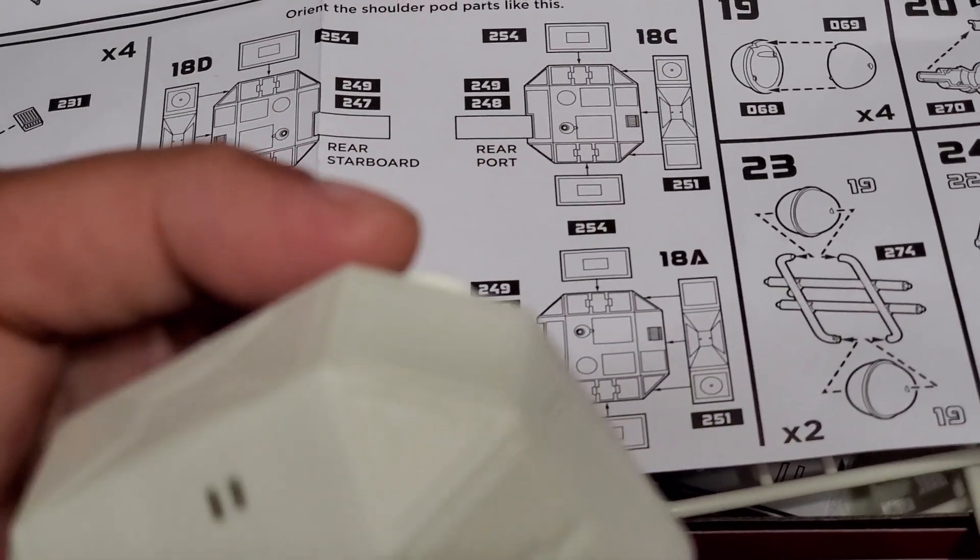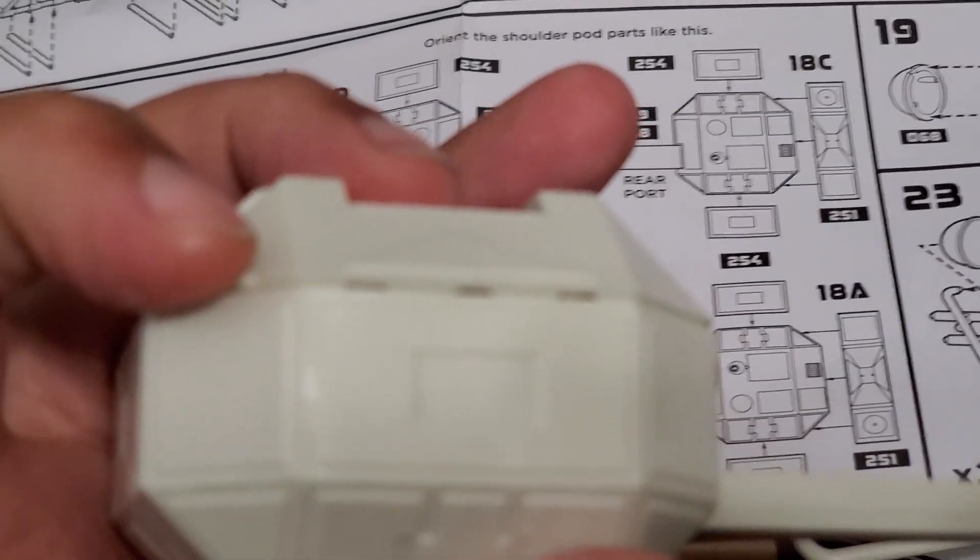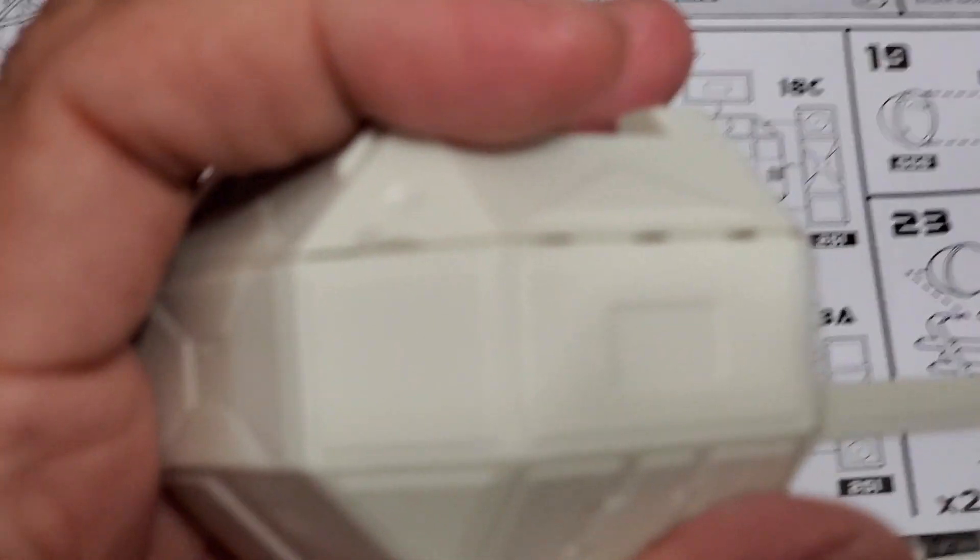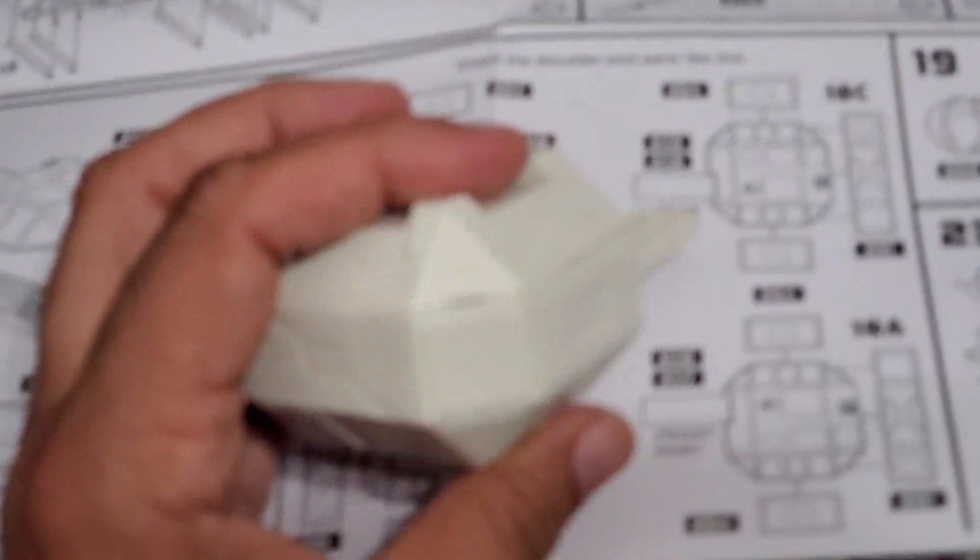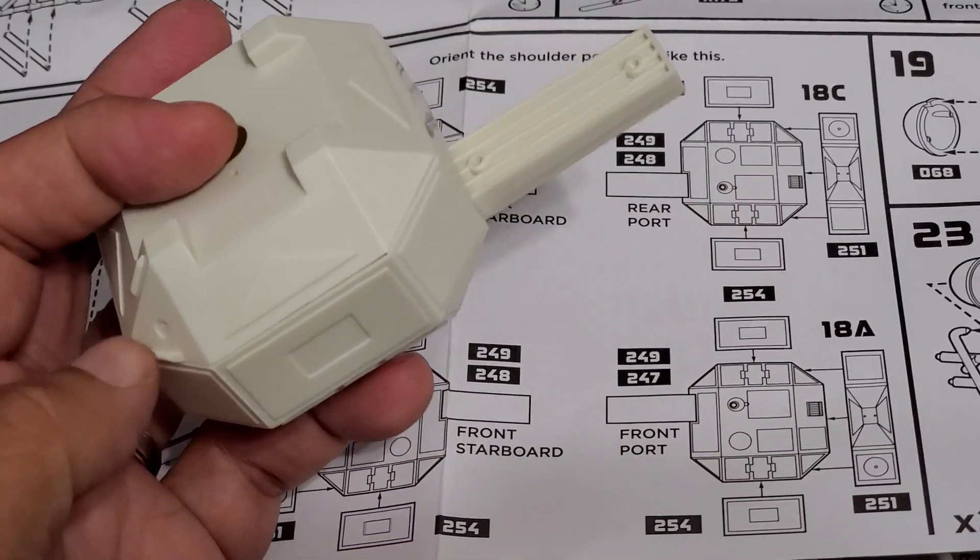There are these two - let me get this on camera properly - the bottom piece of this setup has these two protrusions. See that? There's one here and one here.